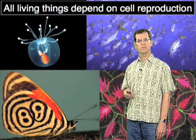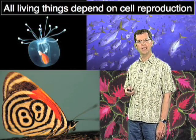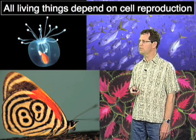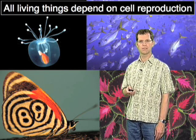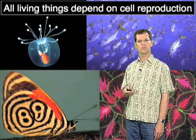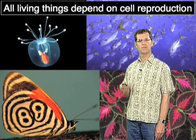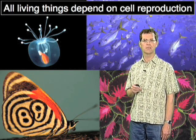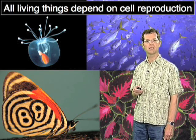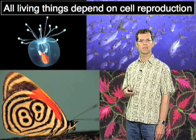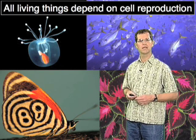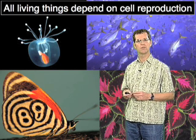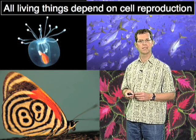It's been known since the early 1800s that all living things are composed of individual units called cells. The growth, development, and survival of all living things depends on the reproduction of those cells. So cell reproduction is clearly a fundamentally important biological process.